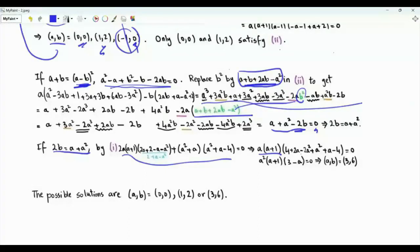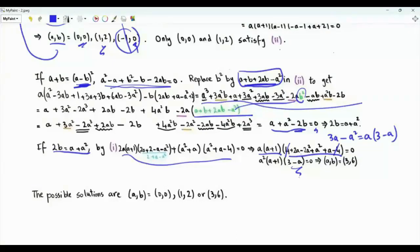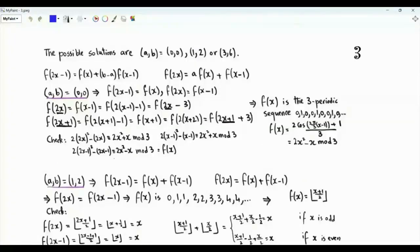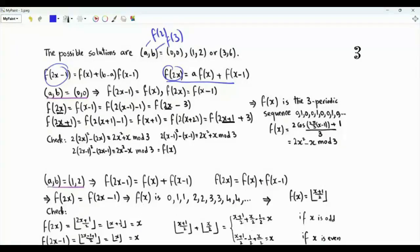We can check that the pair (a,b) = (3,6) satisfies all our equations. Recall that once we specify a = f(2) and b = f(3), we fully specify the sequence. We have three solutions. Using the expressions for f(2x) and f(2x-1), we obtain three distinct sequences.